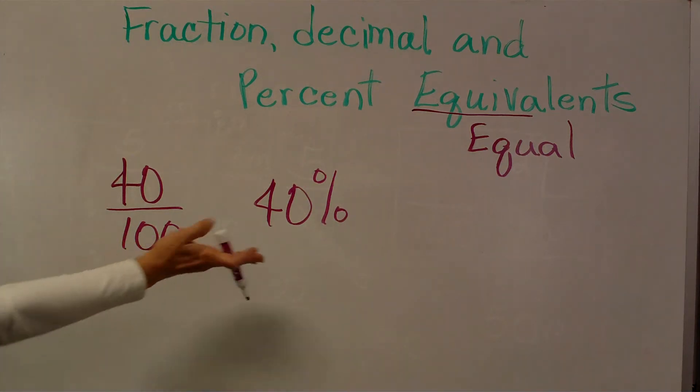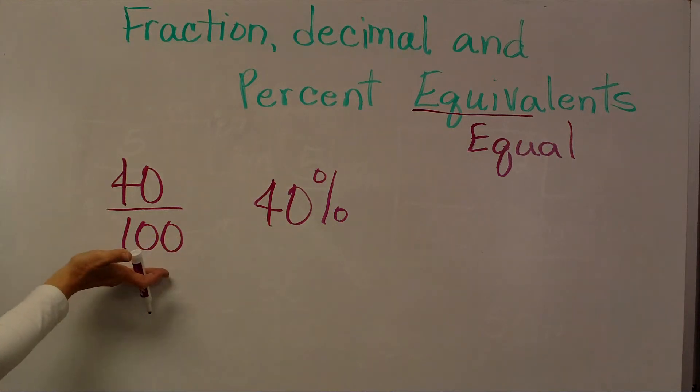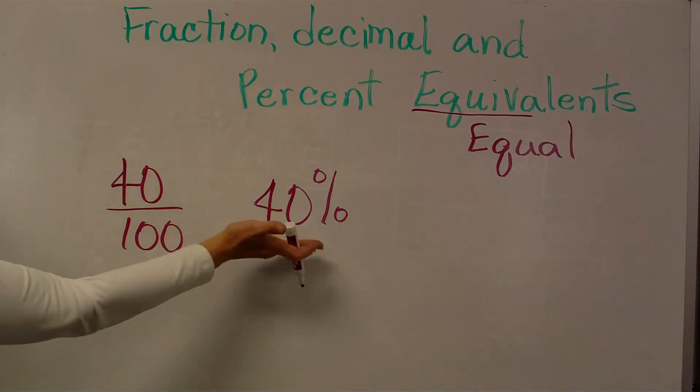To change a percent back to a fraction, they want to make the relationship. It means something out of 100. 40 out of 100 is 40 percent.